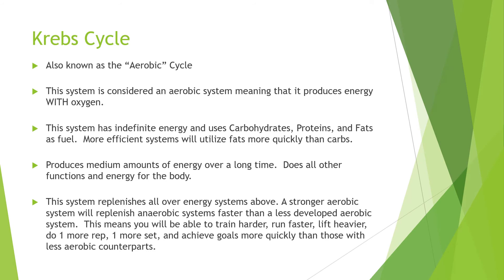Then you have the Krebs cycle, also known as the aerobic system. This system is considered aerobic, meaning it produces energy with oxygen. This system has an indefinite energy supply. It uses carbohydrates, proteins, and fats as fuel. More efficient, more conditioned and trained humans will utilize fats more quickly than carbohydrates, though carbohydrates are the body's preferred energy method. The human body prefers carbs over fats, but well-trained individuals will utilize more fats than carbs.